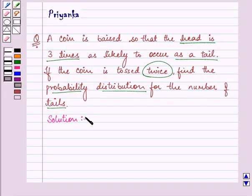Here it is given that when a coin is thrown, the probability of getting a head is three times that of the tails.